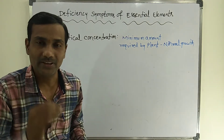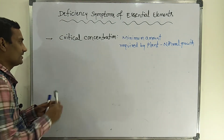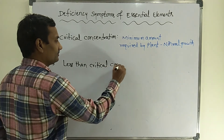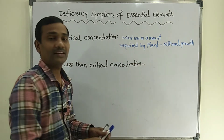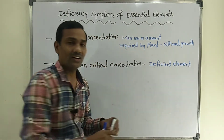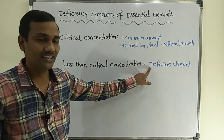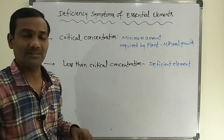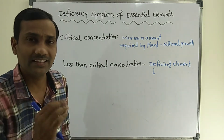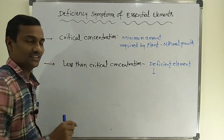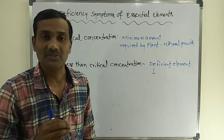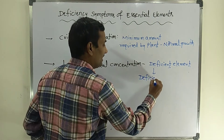If any mineral element is available in less than its critical concentration, that element is called a deficient element. A deficiency element means it is available to the plant in less than the required amount — less than critical concentration. If the element is available in a lesser amount, that exhibits different symptoms in the plant, which are called deficiency symptoms.